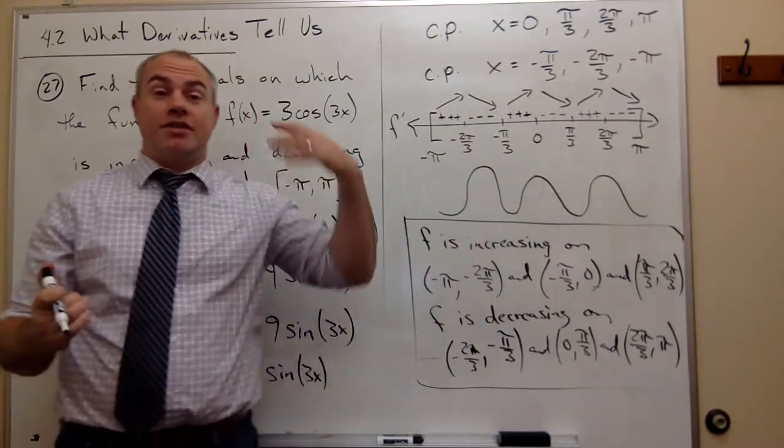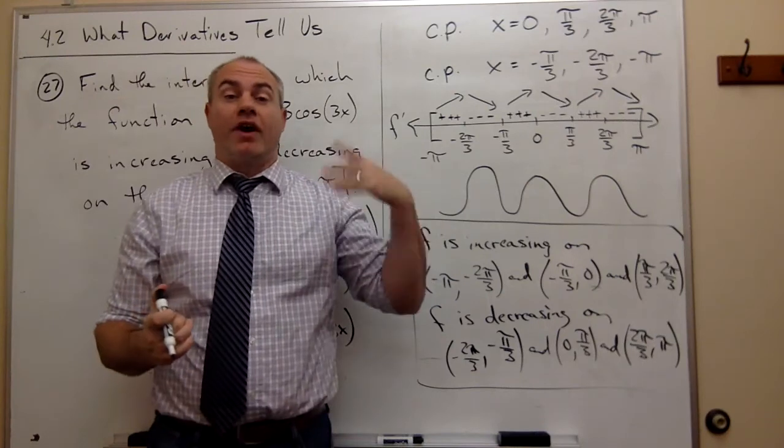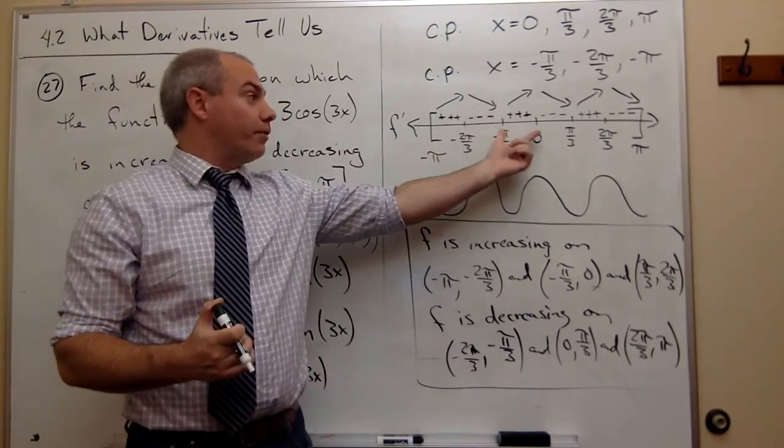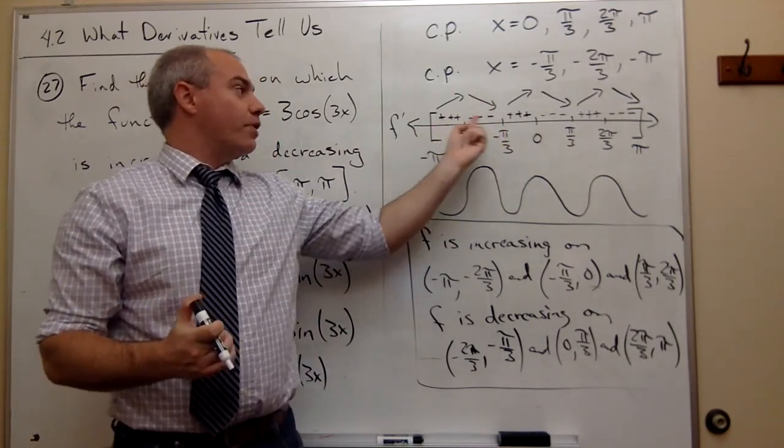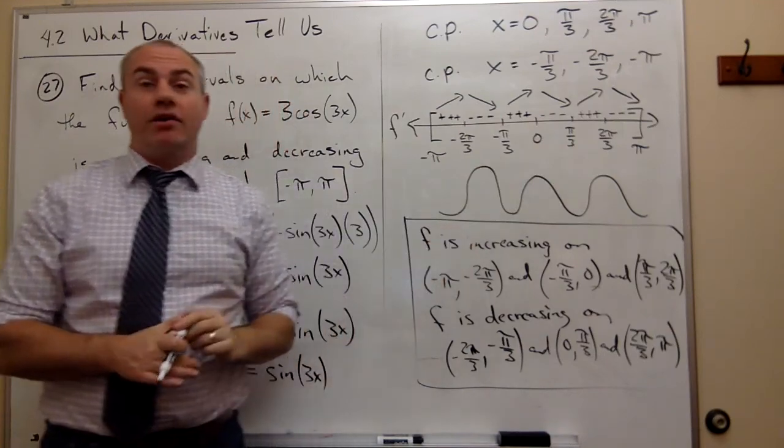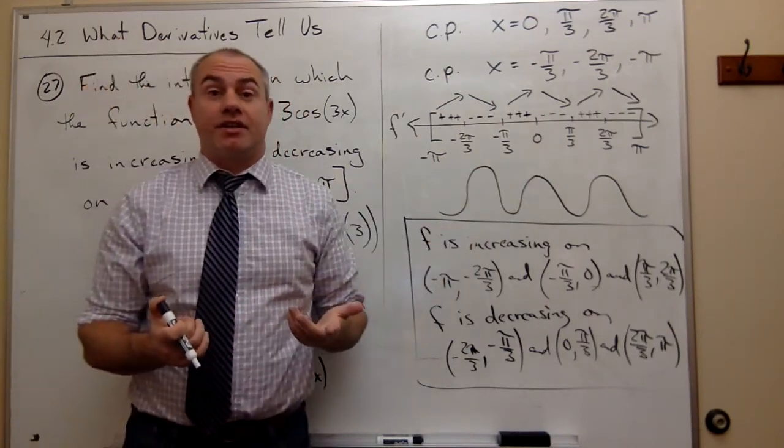So the general policy is take the derivative, find the critical points, put the critical points on a number line, see where the positives and the negatives fall, and then you can say where it's increasing and decreasing.